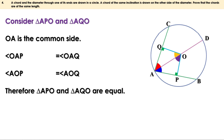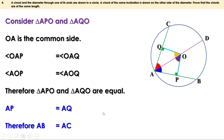Triangle APO and triangle AQO are equal. When two triangles are equal, the sides opposite to equal angles are equal. These two angles are equal, and the sides opposite to them are AP and AQ, so AP equals AQ. AP is half AB and AQ is half AC. Therefore AB and AC are also equal — the chords are of the same length.